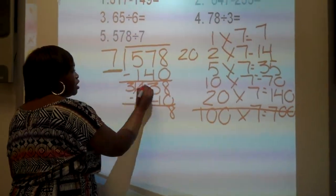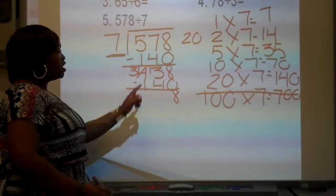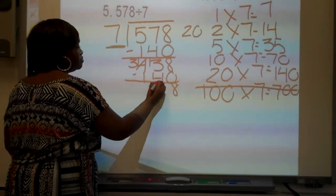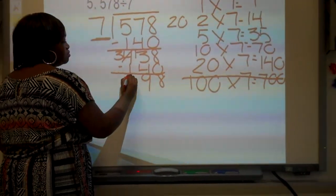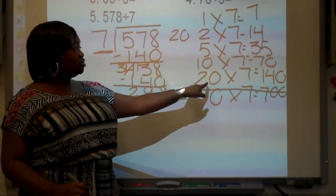4 becomes a? 3! 3 becomes a? 13! 13 minus 4 is? 9! 3 minus 1 is? 2! Which trick did I just use? 20!